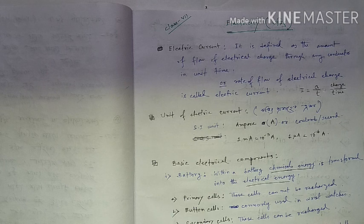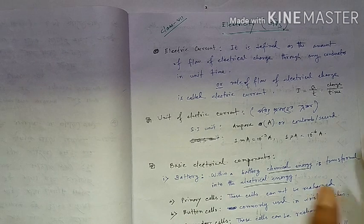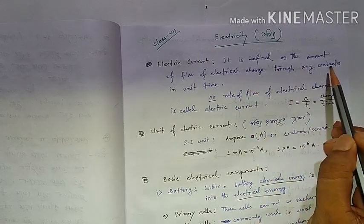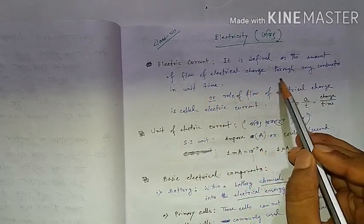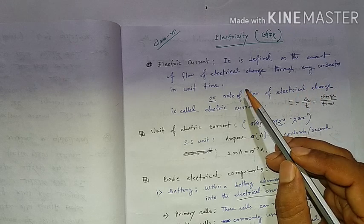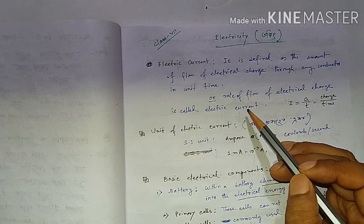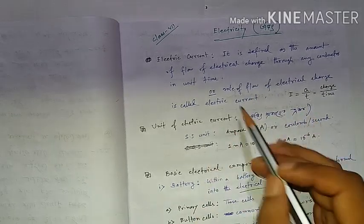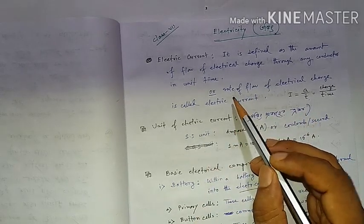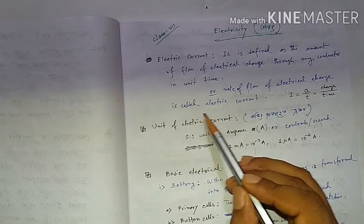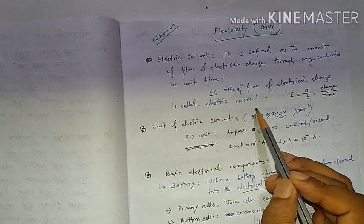Electric current is defined as the amount of flow of electrical charge through any conductor in unit time. The rate of flow of electrical charge is called electric current.